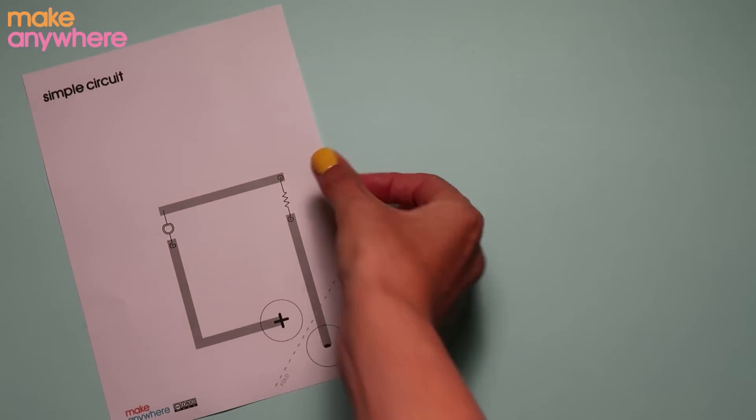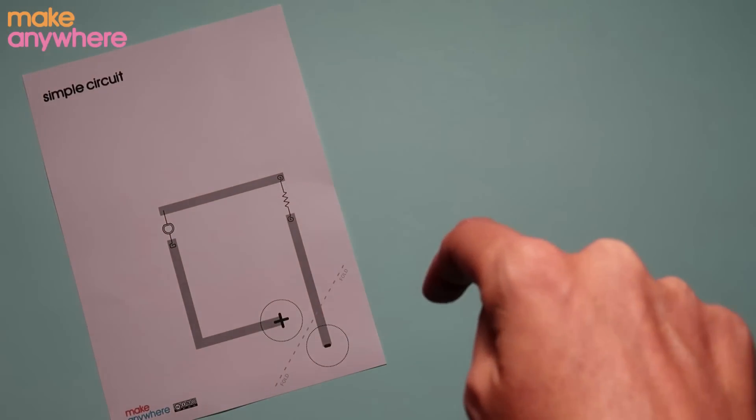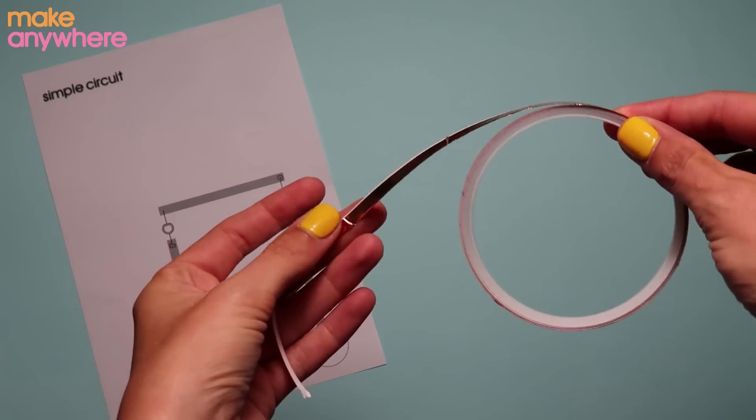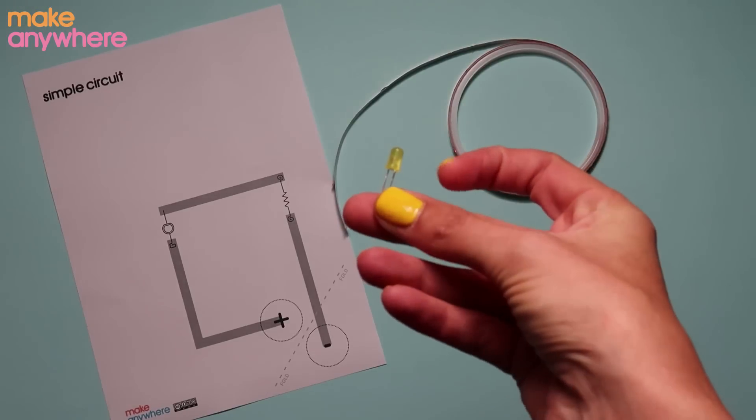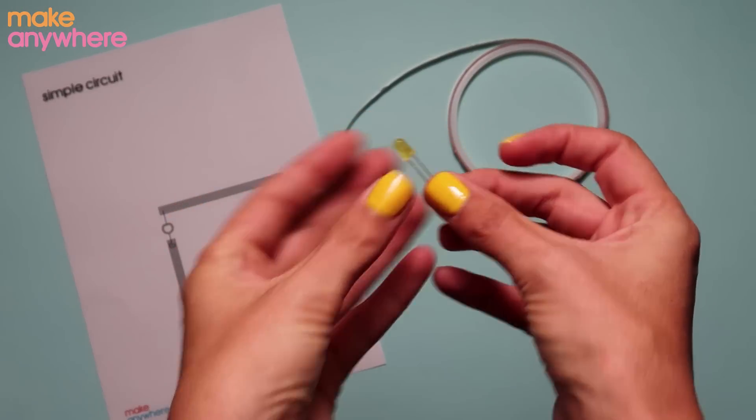You'll need our free template which you can find in the description below, some copper tape, I'm using 5mm, an LED or light emitting diode, we're using a 5mm yellow one.